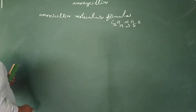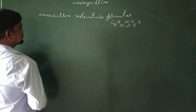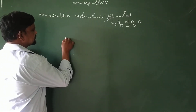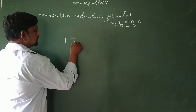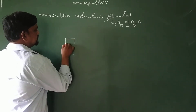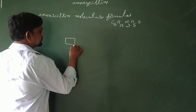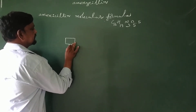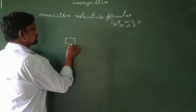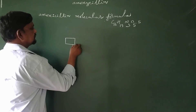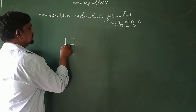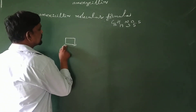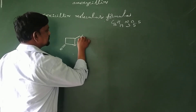Amoxicillin's structure — I have written this in the study yesterday. First, amoxicillin's structural law: this is a beta-lactam ring, a four-membered ring. This beta-lactam four-membered ring is fused with sulfur.